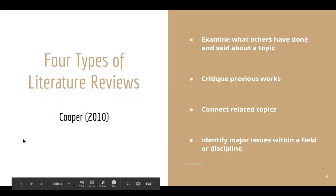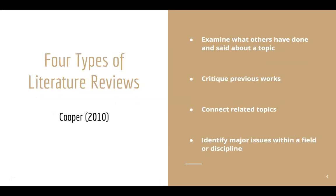There are four types of literature reviews. The first allows you to examine what others have done and said about a topic. Another involves critiquing previous work — going in to identify holes in someone's work and how they could be filled by further research in another area. Critiquing doesn't only mean tearing work down; it can also mean building an argument for what an author could have done differently, based on what another author tried.